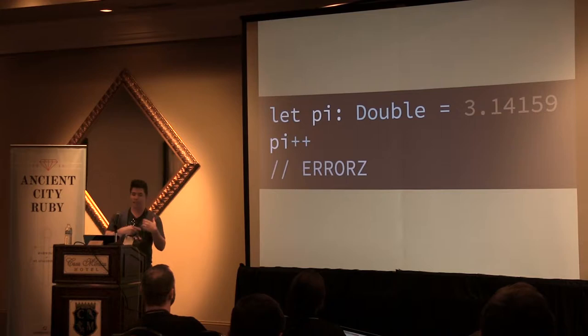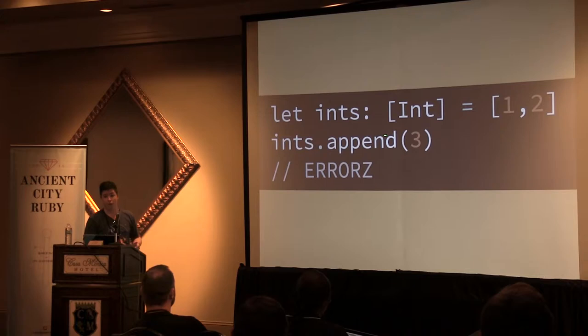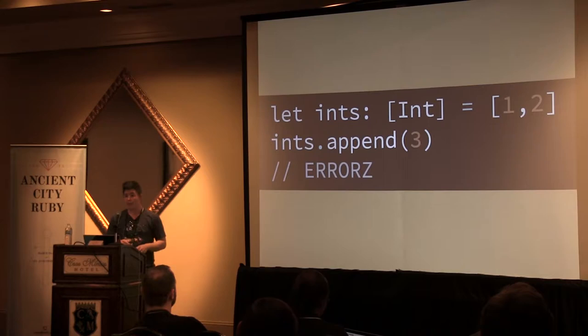Unlike Ruby, constants in Swift also prevent mutations. In Ruby, if we create a constant with a mutable type, we can mutate that value — we'll often freeze those values if we want to prevent mutation. But Swift does it for us at a language level. So if we declare an array of integers as a constant with the let keyword and try to call a mutating function, it'll actively prevent that.